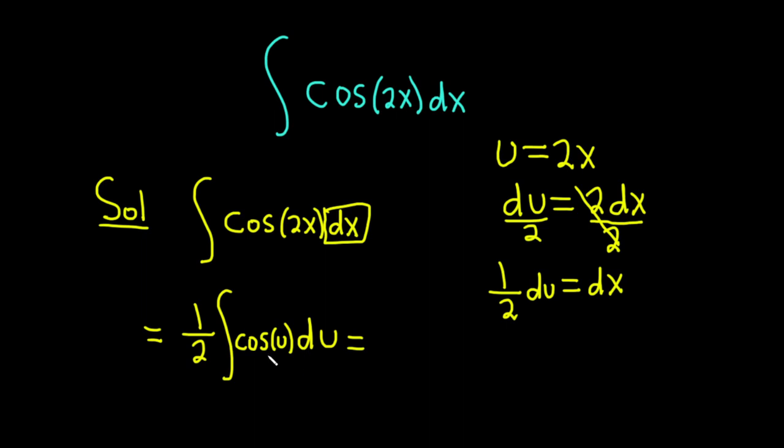Well, the derivative of sine is cosine. So when you integrate cosine you just get sine. So this is 1 half sine of u plus our constant of integration capital C.